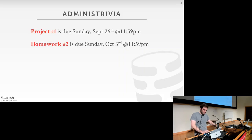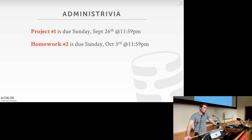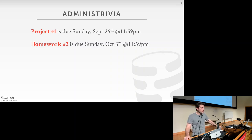Before we get going, we have to talk about some administrative things. Project number one will be due on Sunday, September 26th, at 11:59 p.m. And homework number two, which is about indexes and which we'll cover in the next couple of lectures, is going to be released today and will be up on the website. That will be due on Sunday, October 3rd, also at 11:59 p.m.